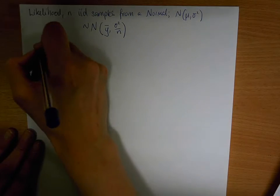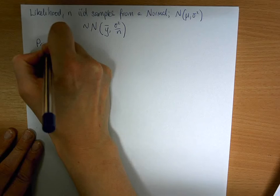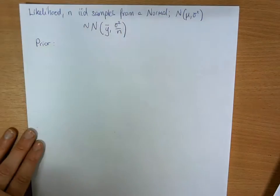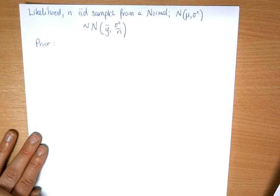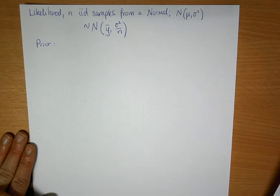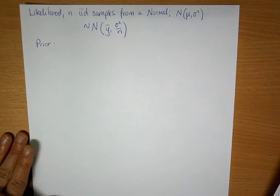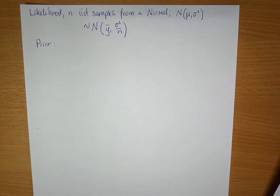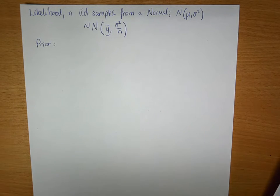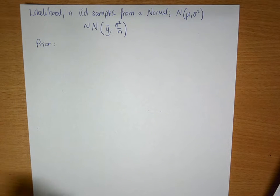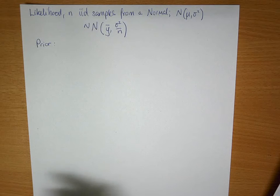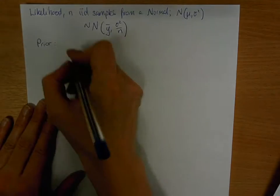Now if we have a prior, recalling that the product of Gaussian or normal distributions is also a Gaussian normal distribution, it's not a bad idea to have our prior also be a normal distribution, because then we're going to have a normal distribution times a normal distribution, and the result will be a normal distribution.